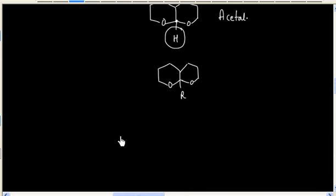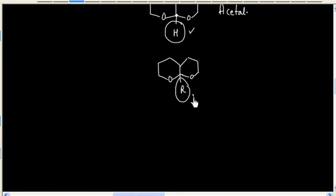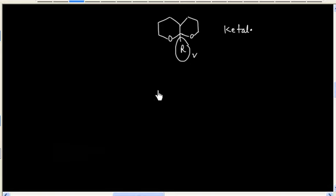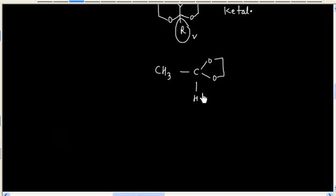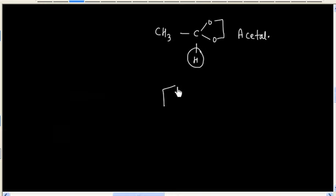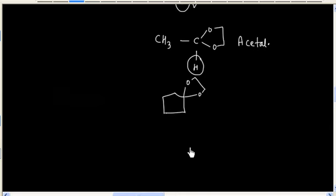What about this? This is a ketal because we have replaced hydrogen with an alkyl group. So this is an acetal because we have two OR groups and one hydrogen. Now what about this molecule? This is a ketal because we have two OR groups and two alkyl groups.